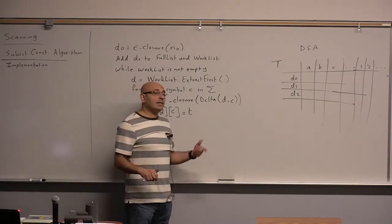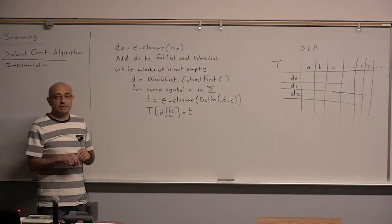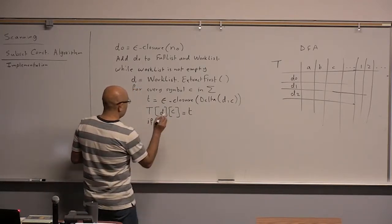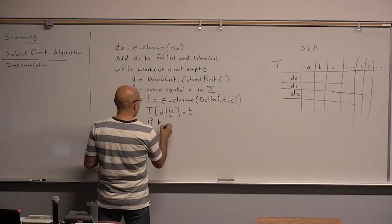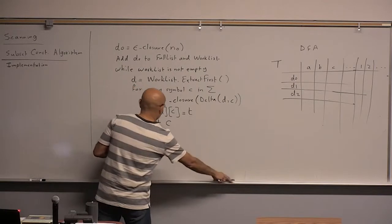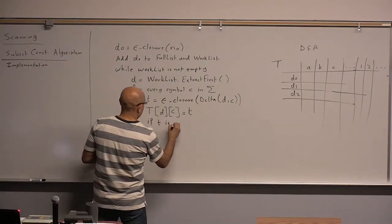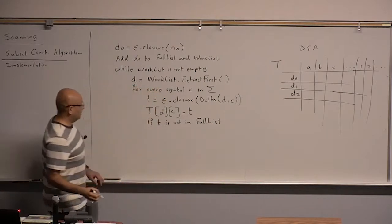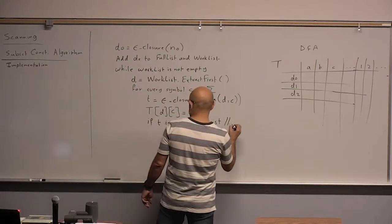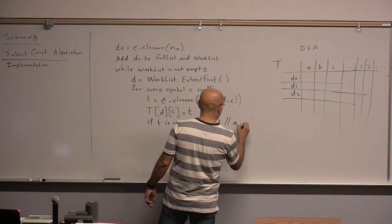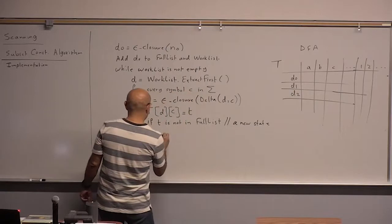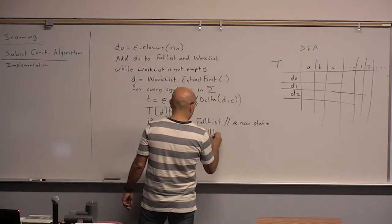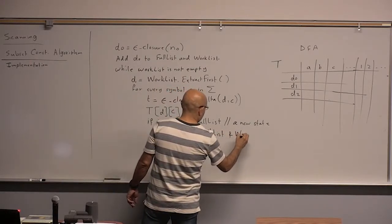If T is a state that has been seen, we don't do anything. We have already processed it. So in this case, if T is new, if T does not belong to, or let's write it in words, is not in full list, then it's a new state. If it's not in the full list, then it's a new state. Then we add T to full list and work list.